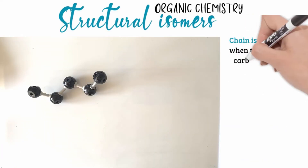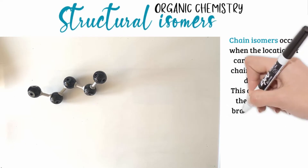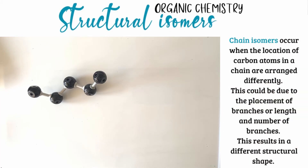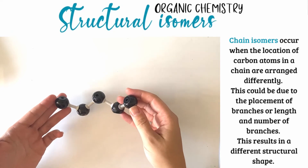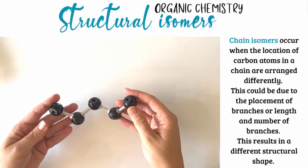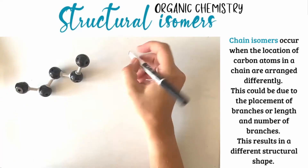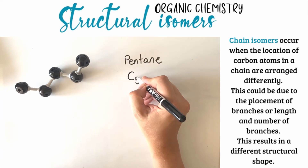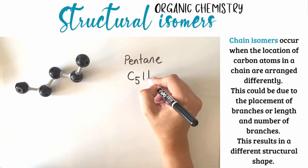Chain isomers occur when the location of carbon atoms in a chain are arranged differently. This could be due to the placement of branches, or the length and number of branches in the chain. This results in a different structural shape but the formula remains the same. Consider this molecule — I've left the hydrogen atoms off for clarity. This is an alkane with five carbon atoms, making it pentane. The formula for pentane is C5H12.